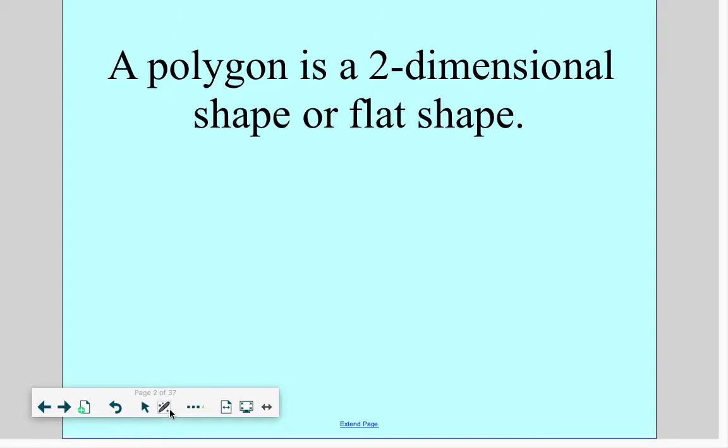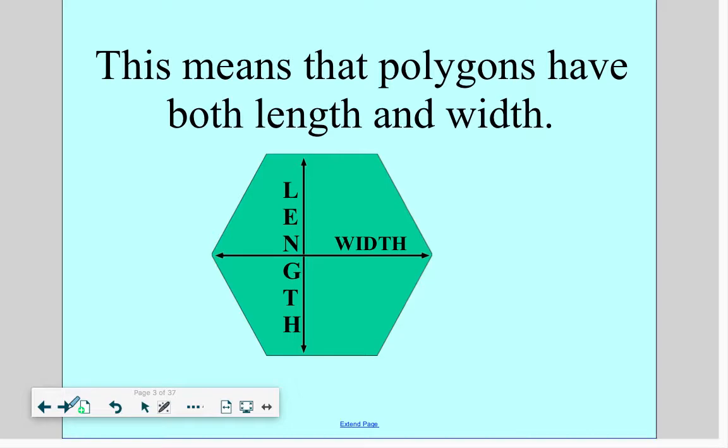A polygon is a two-dimensional flat shape, so it's flat like a sheet of paper. 2D is a short way of saying two-dimensional. This means if something is 2D that you can measure its length and its width. So you just need to know that polygons are flat like paper.